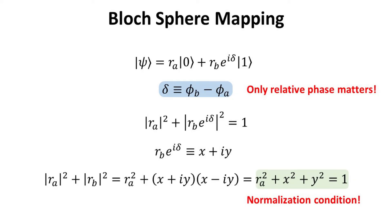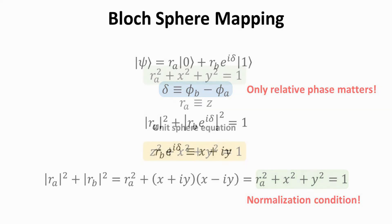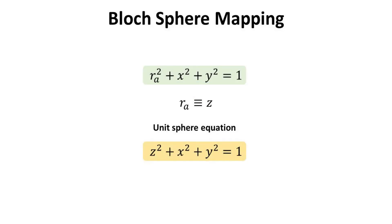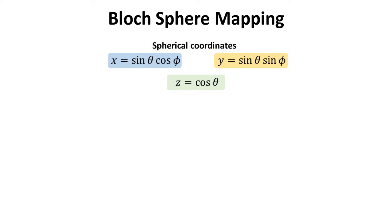With this, we are now ready to do the mapping onto geometrical variables on the Bloch sphere. Renaming the R_A variable to Z, we get the known unit sphere equation. In spherical coordinates, X is equal to sine of theta times cosine of phi, Y is equal to sine of theta times sine of phi, and Z equals cosine of theta.